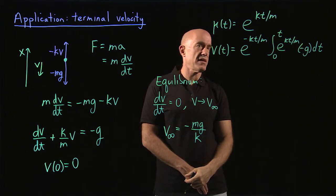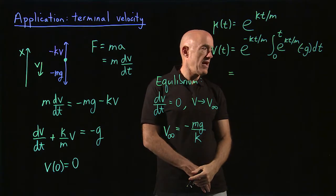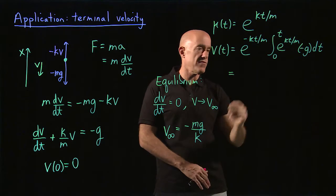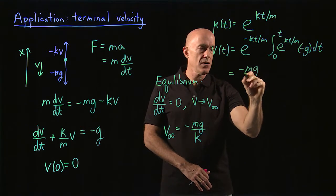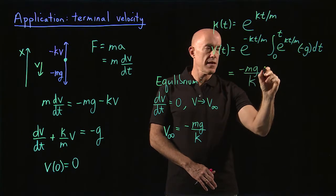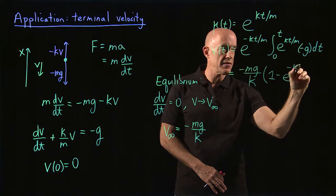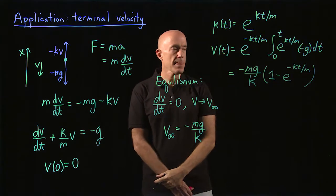And that gives us a closed form expression for the velocity. You have to do this integral. This is an easy integral to do. It's just the integral of the exponential function. So if you do this integral and then you multiply through by e to the minus kt over m, you'll end up with minus mg over k times 1 minus e to the minus kt divided by m.